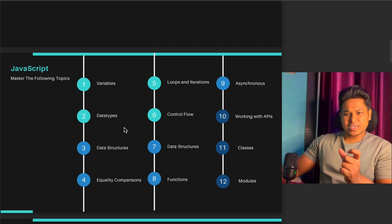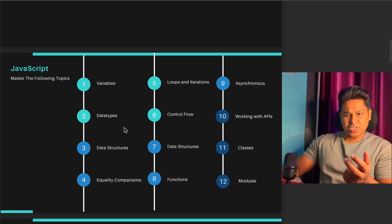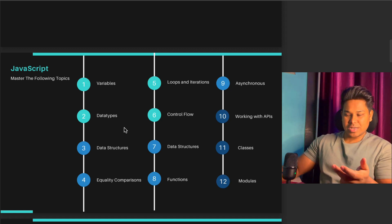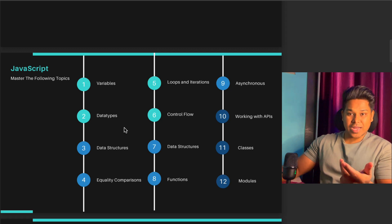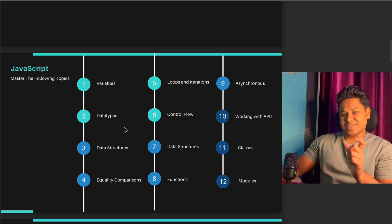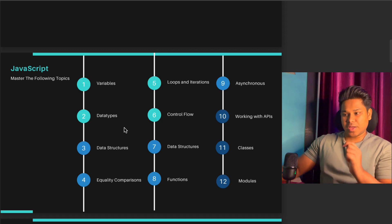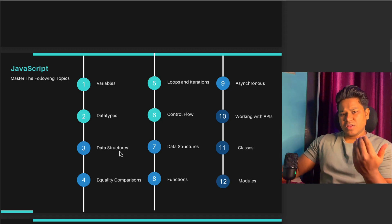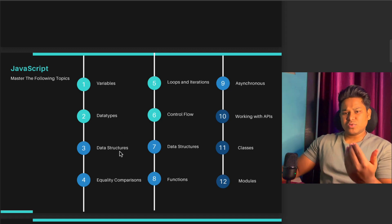After data structures, move to equality comparison, because we're going to build a lot of if-else statements for checking multiple conditions — like whether the user is already logged in or has already created a contract. You need to know how equality comparison works exactly. That's the fourth topic.